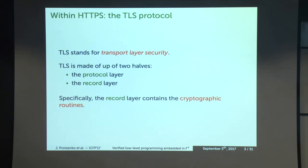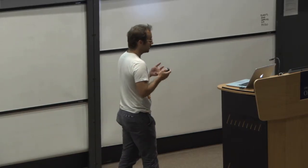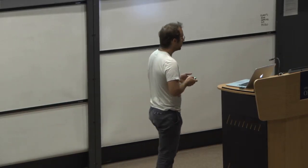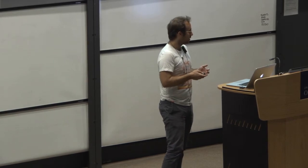There are two interesting bits in TLS itself. There's the protocol layer, which I won't talk about much — it's mostly about setting up parameters, saying hello to the server and agreeing on how you want to communicate. The interesting bit for this talk is the record layer, which contains a lot of the actual cryptography that is being run.